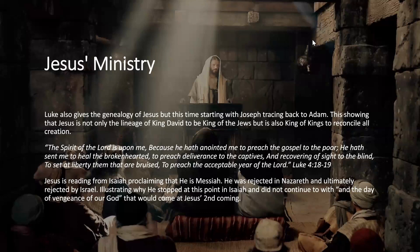Luke 4:18-19 — this is what Jesus read himself in the synagogue: 'The Spirit of the Lord is upon me because he has anointed me to preach the gospel to the poor. He has sent me to heal the brokenhearted, to preach deliverance to the captives and recovering of sight to the blind, to set at liberty them that are bruised, to preach the acceptable year of the Lord.' Jesus is reading from Isaiah and openly proclaiming that he is Messiah. He was rejected in Nazareth and ultimately rejected by Israel. This illustrates why he stopped at this point in Isaiah — he did not continue with what was next: 'the day of the vengeance of our God.' That part would come at Jesus' second coming.